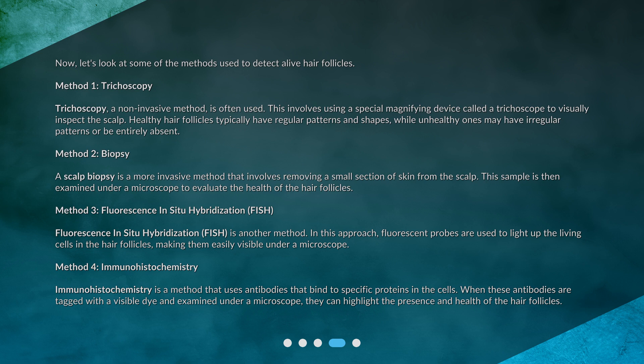Method 4: Immunohistochemistry. Immunohistochemistry is a method that uses antibodies that bind to specific proteins in the cells. When these antibodies are tagged with a visible dye and examined under a microscope, they can highlight the presence and health of the hair follicles.